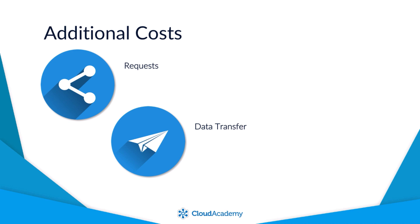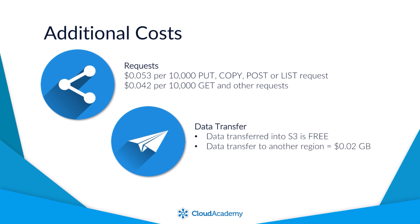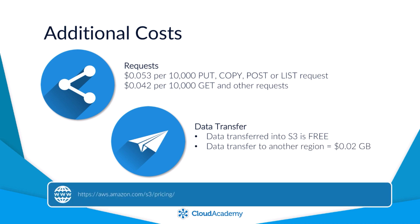As an example, when using the Standard storage class in the London region, it will cost just over 5 cents per 10,000 PUT, COPY, POST or LIST requests, and just over 4 cents per 10,000 GET requests and all other request types. Data being transferred into S3 is free; however, transferring data out to another region costs 2 cents per gigabyte. For the latest information on costs, please refer to the Amazon S3 pricing page.